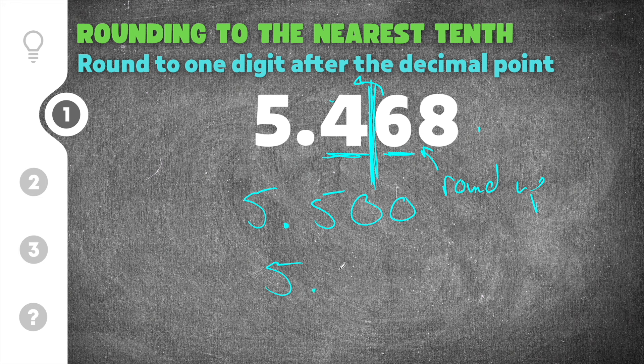And then when we write our answer, we're going to write 5.5 and we're not going to include any of the zeros because they represent a value of nothing, so we don't actually need to write them. So the final solution is just going to be 5.5.